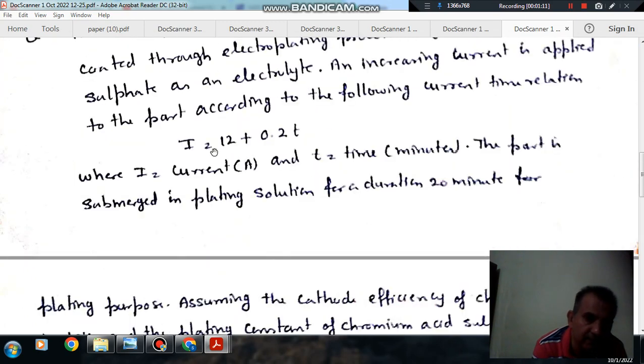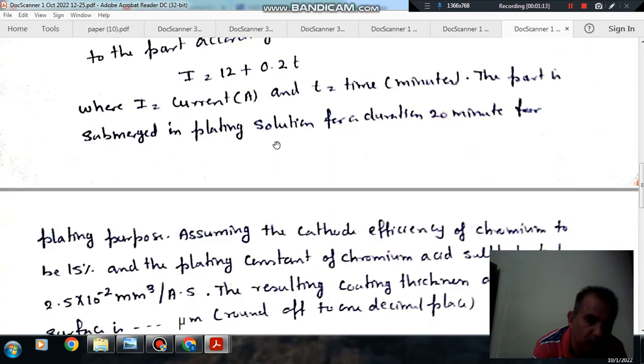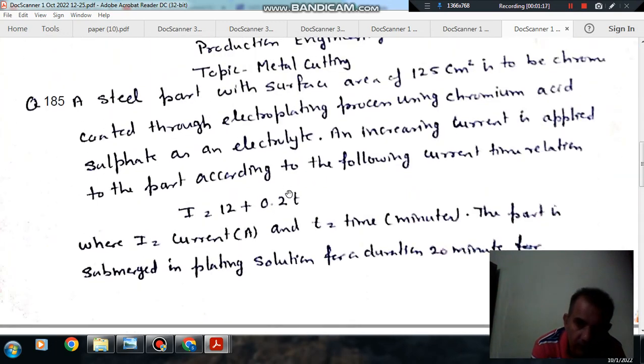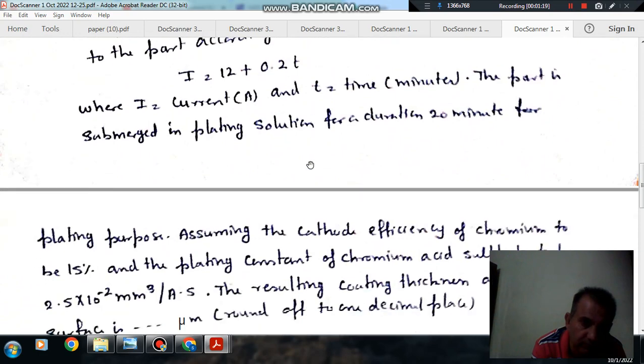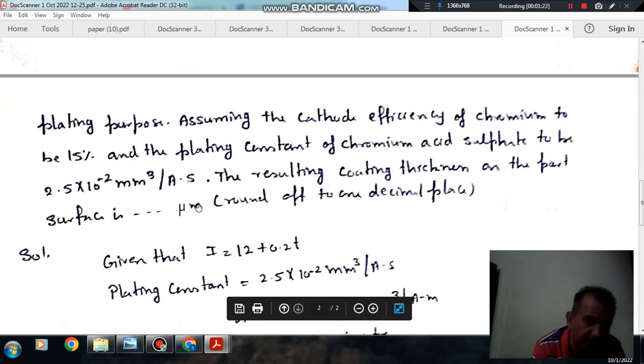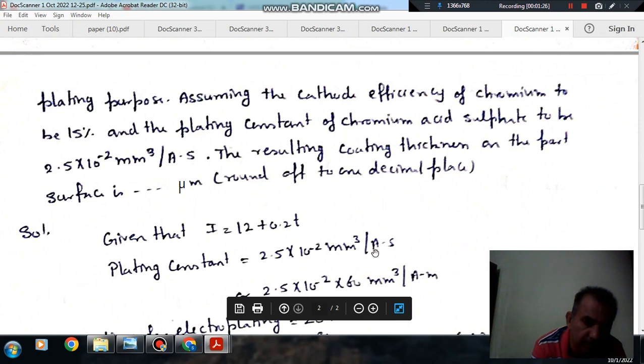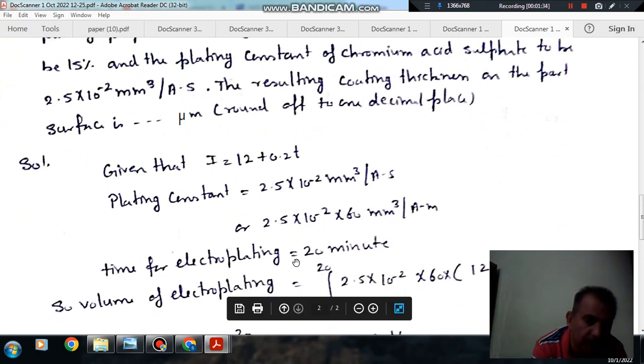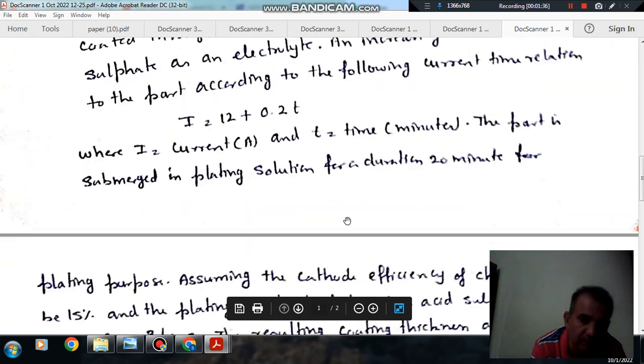So given that the current is 12 plus 0.2t and plating constant is 2.5 times 10 to the minus 2 mm cubed per ampere per second, converting it into 2.5 mm cubed per ampere per minute. Time for electroplating is equal to 20 minutes.